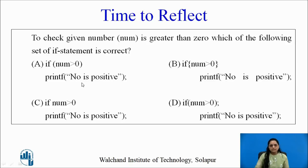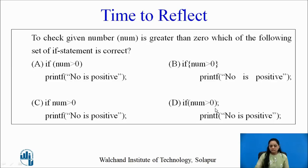Let us look at each option in detail. Option A: `if` is followed by round brackets containing the condition, then the statement belonging to `if` — this is correct. Option B: curly parentheses are used instead of round brackets, which is syntactically wrong. Option C: round brackets are not used, so it is also incorrect. Option D: although syntactically it may seem correct, putting a semicolon after `if` is different — it is equivalent to not using any condition.